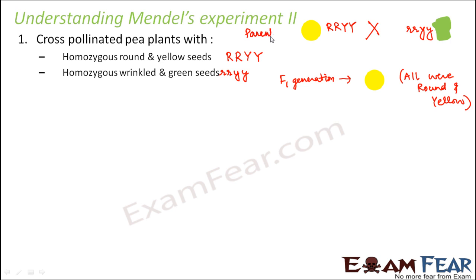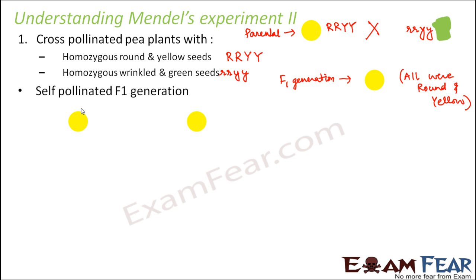Then, in a similar way, he self-pollinated the F1 generation — that means the F1 generation plants were crossed amongst themselves — and we will now see what was found as a result.